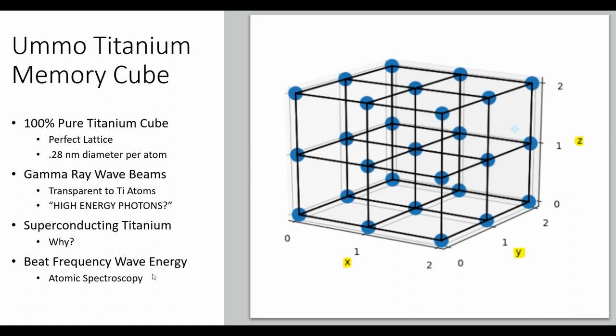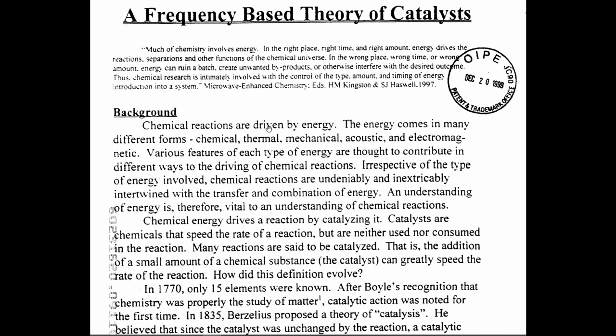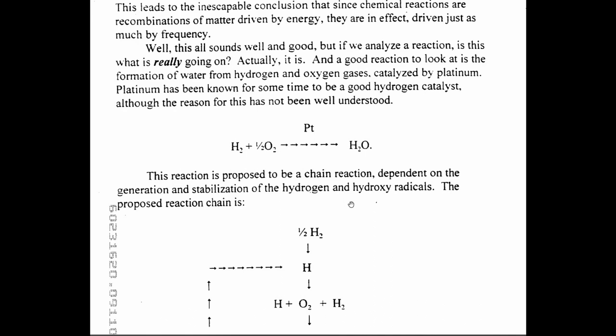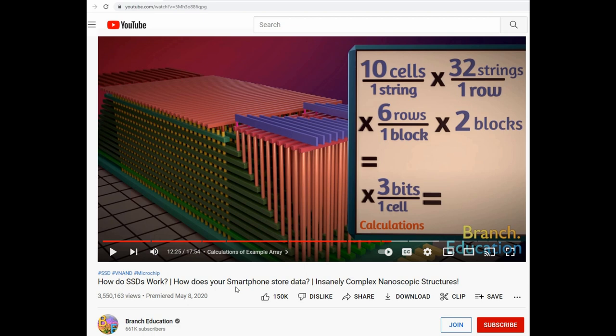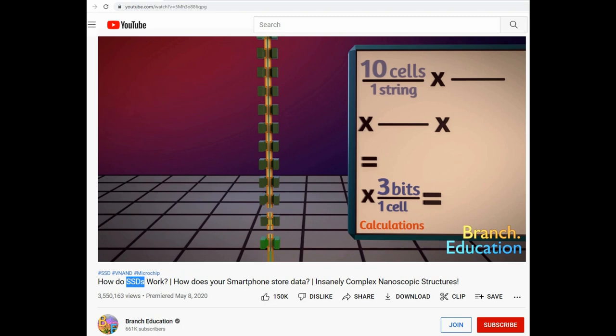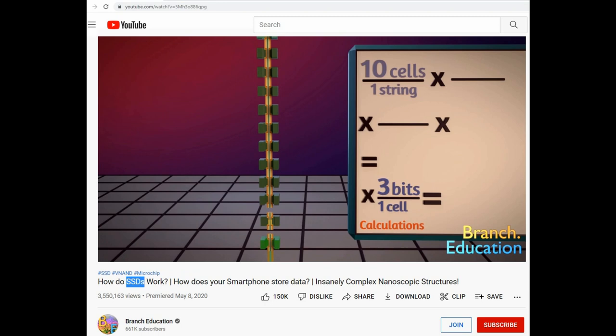This concept of non-invasive three-dimensional matter manipulation could be used for all kinds of things. If this interests you, I would recommend reading Juliana Mortensen's paper on a frequency-based theory of catalysts — it's a great introduction on how to use electromagnetic frequencies to manipulate matter. In terms of our newest storage technology, we are moving away from the spinning magnetic hard drive. The traditional hard drive is starting to be replaced by the solid state drive — instead of using magnetism to store data, we are starting to use dielectric polarization, or simply said, capacitors.